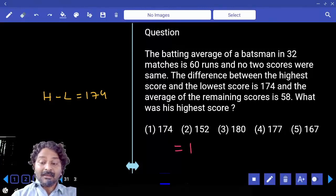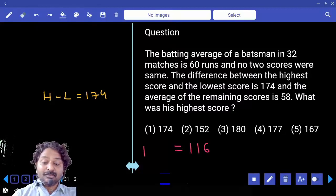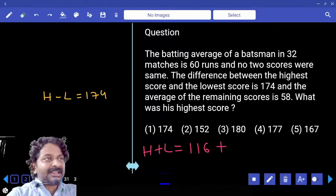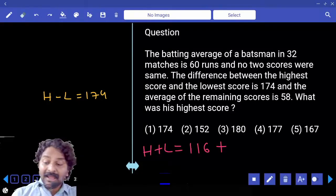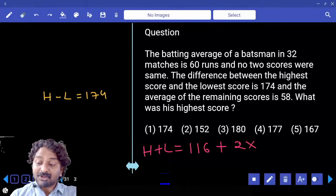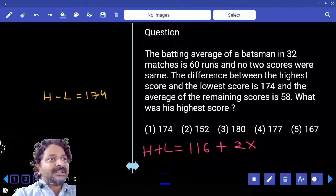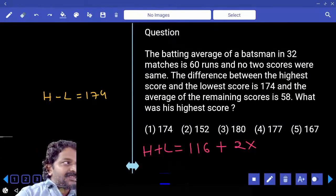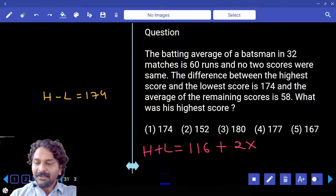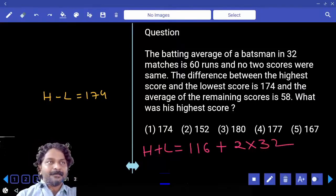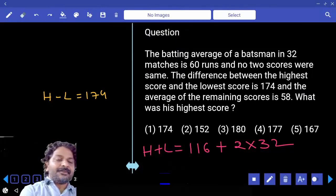116. So in these two matches he scored more than 116, agree? And average increased by how much? Average increased by 2 for how many matches? Is it for 30 matches or all 32 matches? 32 matches only. 2 into 32, how much is that? 64. 116 plus 64.